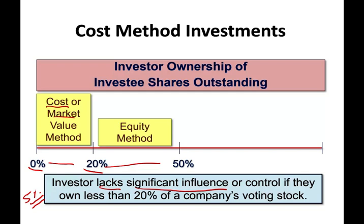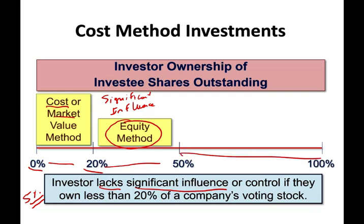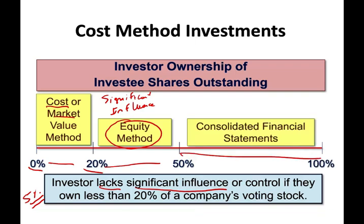If you own between 20% to 50%, you are considered to have significant influence. You have enough power to vote yourself onto the board of directors and have a saying in the company. Therefore, we're going to use the equity accounting method, which we'll cover in the next session. If you own more than 50% — from 50 to 100 — we consolidate your investments, which we don't cover in this chapter.